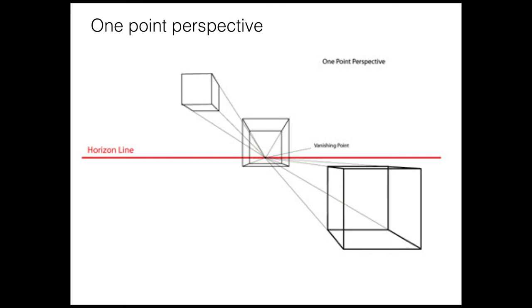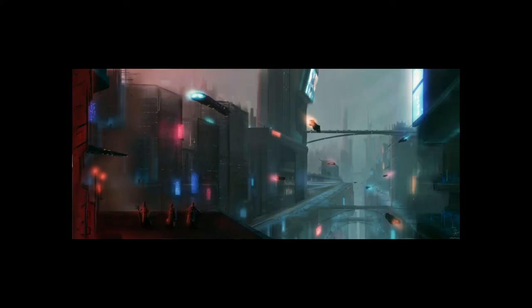Breaking it down simply: here's the horizon line and vanishing point. On this front surface of the see-through box, the orange lines are not going away from us — that surface is flat. Then the side of the box converges because it's going away from us, those lines meeting the vanishing point. The back of the box is finished with a line — the edge of that surface is not receding, so it's a straight line.